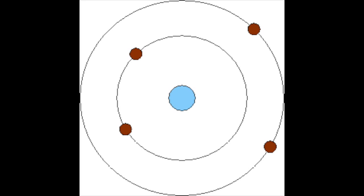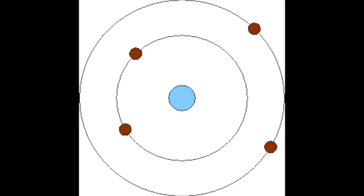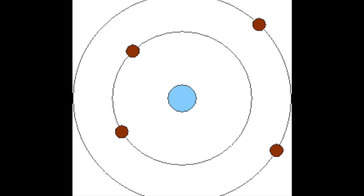Each orbit has an energy associated with it — the orbit nearest the nucleus has energy E1, the next E2, and so on. Energy is absorbed when an electron jumps from a lower orbit to a higher one, and energy is emitted when an electron falls from a higher orbit to a lower one. The energy and frequency of light emitted or absorbed can be calculated using the difference between the two orbital energies.